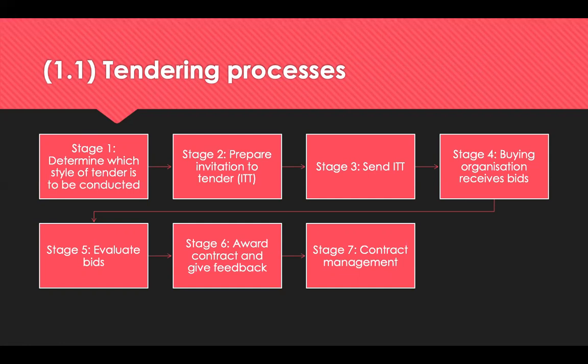Stage five — evaluation: check bids to ensure they've been provided in the correct format and include the required information. Disregard any incomplete or incorrectly formatted bids. Evaluate bids against the stated evaluation criteria, scoring using weightings and scales prescribed by the organisation. Cross-functional teams can be used to guarantee the process is fair, open, transparent, and that the chosen bid is fit for purpose in all areas.